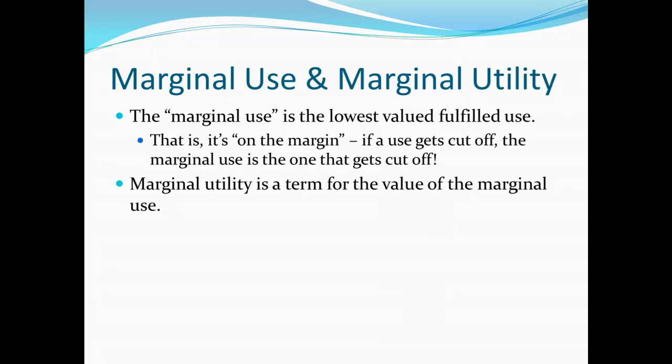Marginal utility is the term we use for the value of whatever the marginal use happens to be. So how valuable is making sock puppets to me? This isn't something where we necessarily have to give a number — simply a rank is enough for choosing between things. Having some kind of numerical index is not necessarily particularly useful.